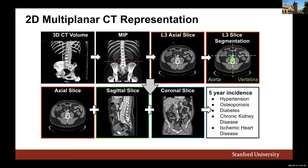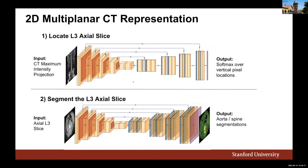We then segment the spine and aorta from this L3 axial slice, which gives us both a sagittal slice and a coronal slice, indicated by dashed green and blue lines. We can then concatenate the axial, sagittal, and coronal slices together as input to our disease risk prediction model. This process first locates the L3 axial slice using an architecture that outputs a softmax over vertical locations from a maximum intensity projection.